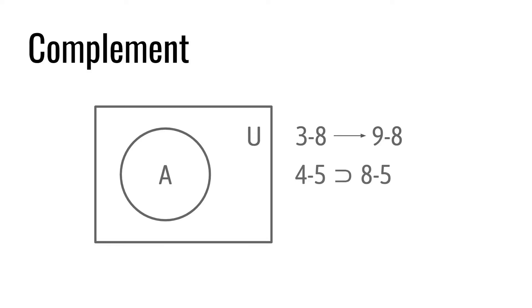Another important characteristic is the property that some PC sets have of keeping their complement invariant by means of transposition or inversion, or both. On the other hand, some sets of cardinal 6, typically known as hexachords, can produce their complement by these operations. For example, the complement of set 6-35 is set 6-35. Obviously, if you transpose the set, it remains the same, but that is also true for its inversion. In other words, the inversion of set 6-35 is identical to its complement, and turns out to be none other than set 6-35 itself.